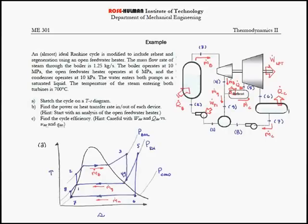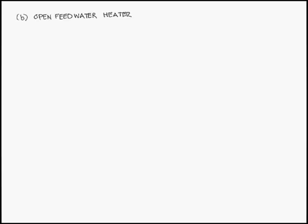The next step in the problem is to find the heat transfer rate in and out of each device and or the power in and out of each device. I've given you the hint that you should start with the open feedwater heater. If you didn't do that and I hadn't given you that hint, you would have been fine. You would just analyze one piece of equipment at a time, and eventually you'll have as many equations as you do unknowns. But the hint that I gave you is such that you can find all the required mass flow rates ahead of time.